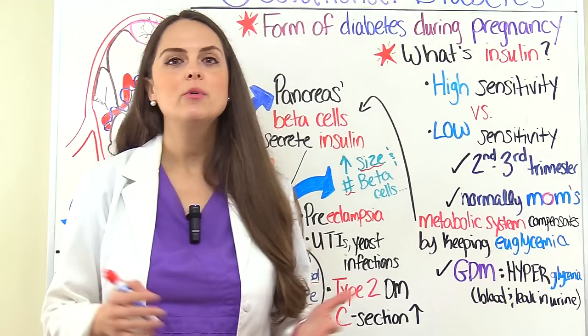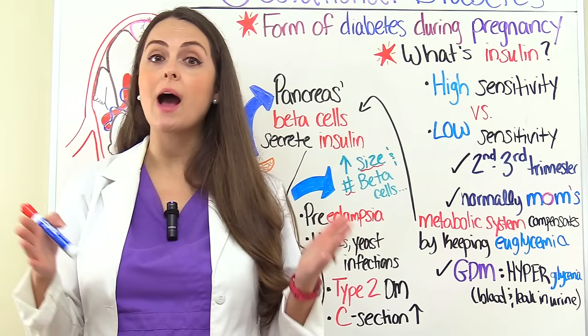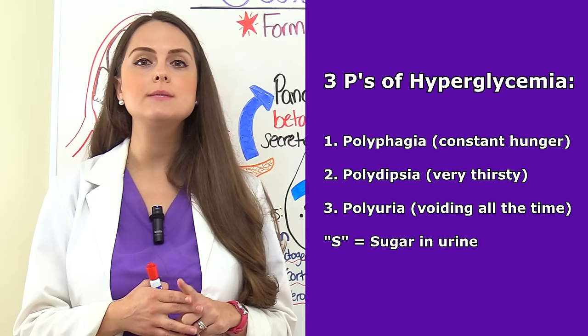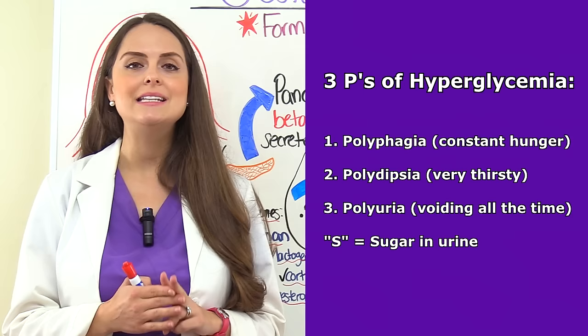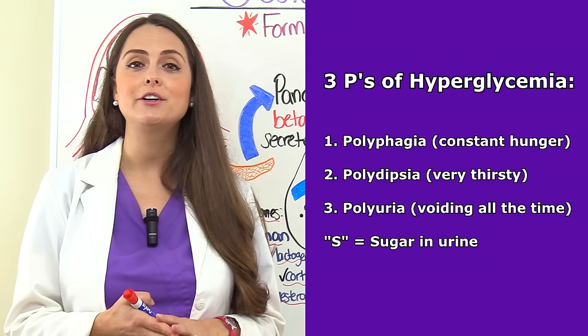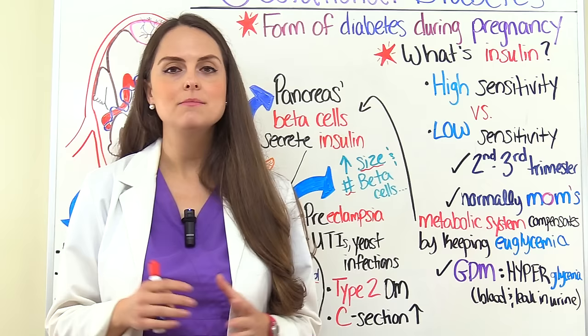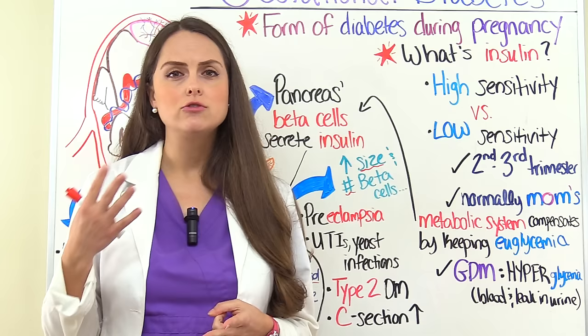What are some signs and symptoms of gestational diabetes? They are very similar to hyperglycemia, because the patient is going to have a high blood glucose level. To help you remember the signs and symptoms, remember the three Ps. Polyphagia — they are constantly hungry. Polydipsia — they are very thirsty all the time. Polyuria — they have to urinate all the time. And S is for sugar in the urine — whenever their urine is tested it will have glucose in it. Some miscellaneous signs and symptoms include fruity breath, feeling hot and very dry with dry mouth, along with urinary tract infections and yeast infections.